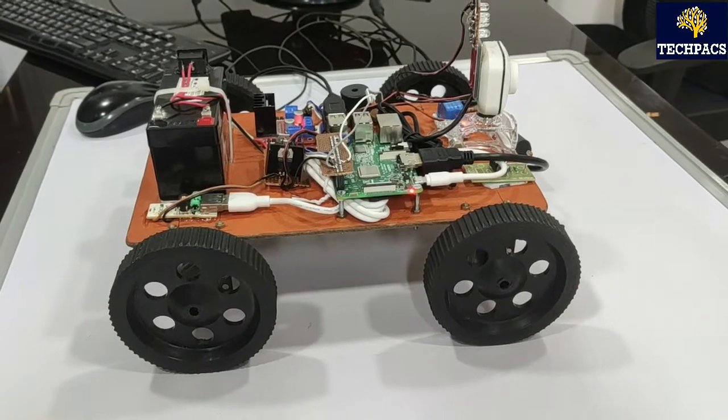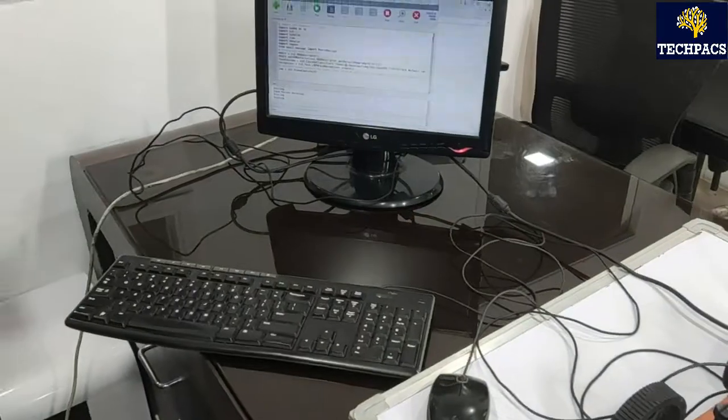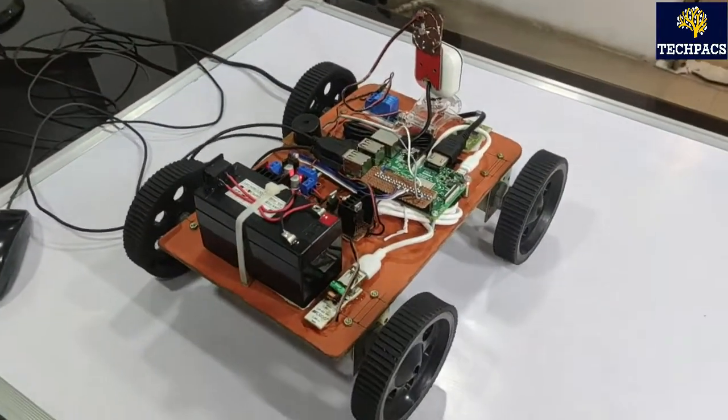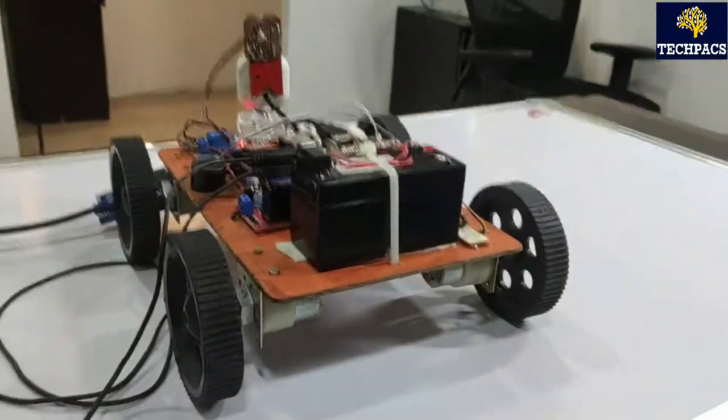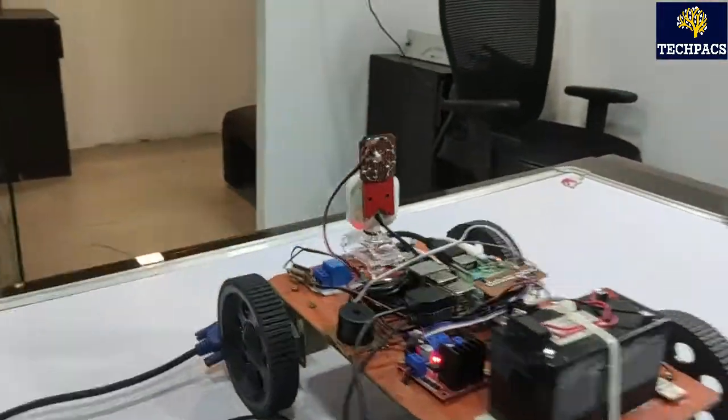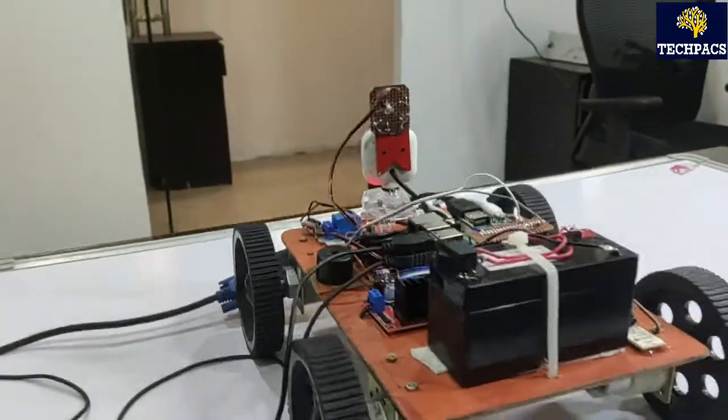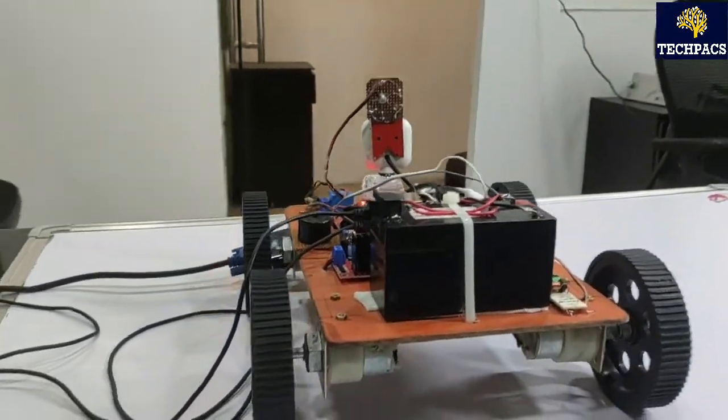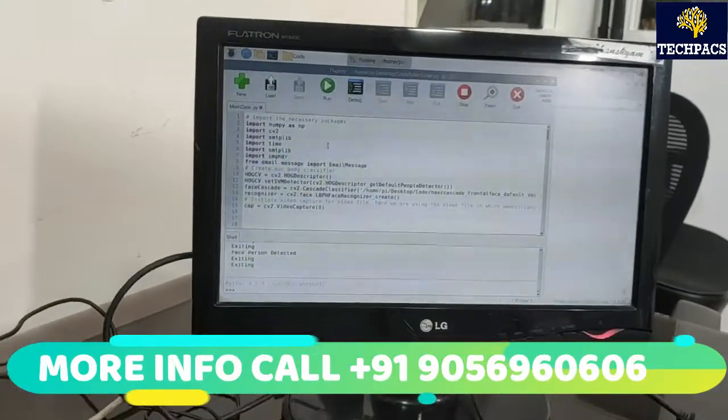As you can see, I have placed the robot on the table and connected the system to it so that I can show you what output we get through the coding. The camera you can see is facing toward the gate.